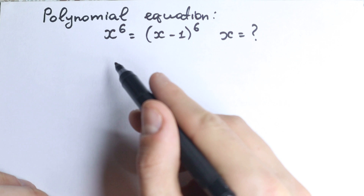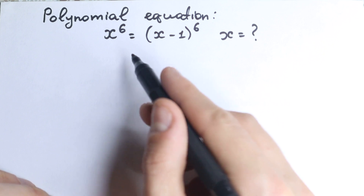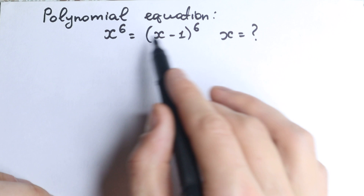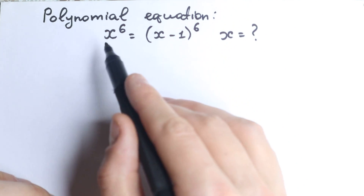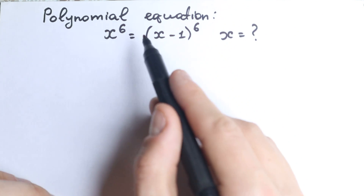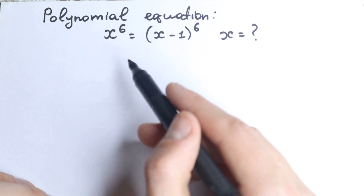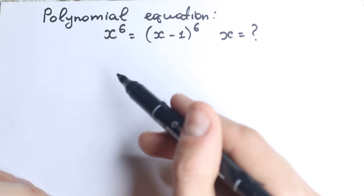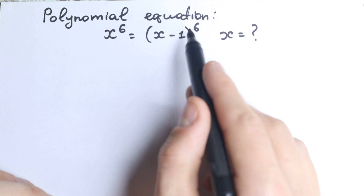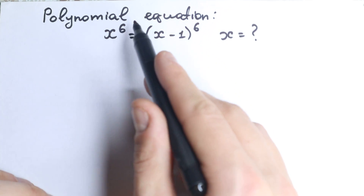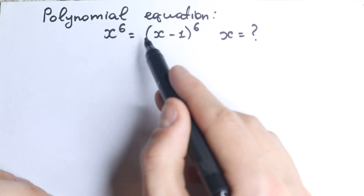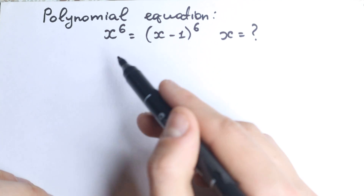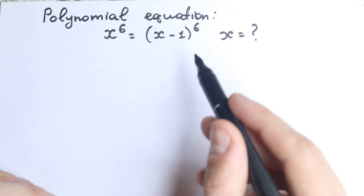On the surface this equation seems very easy, and a lot of students solve it like that — they take sixth roots from both sides and quickly find x. But in math we need to solve it completely, because that approach causes us to miss all complex roots and possibly real number roots too. We need to solve it completely, step by step.